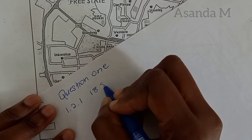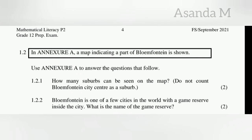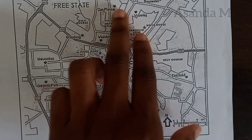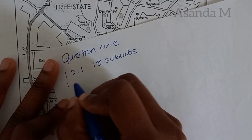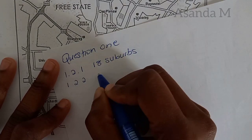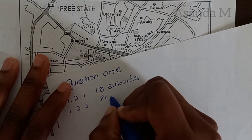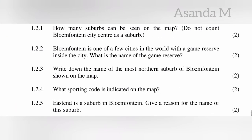The next question says Bloemfontein is one of the few cities in the world with a game reserve inside the city. What is the name of the game reserve? There is a game reserve and it's called Franklin. Question 1.2.2 answer: Franklin. I'm making sure I'm spelling it exactly the way it appears on the map.